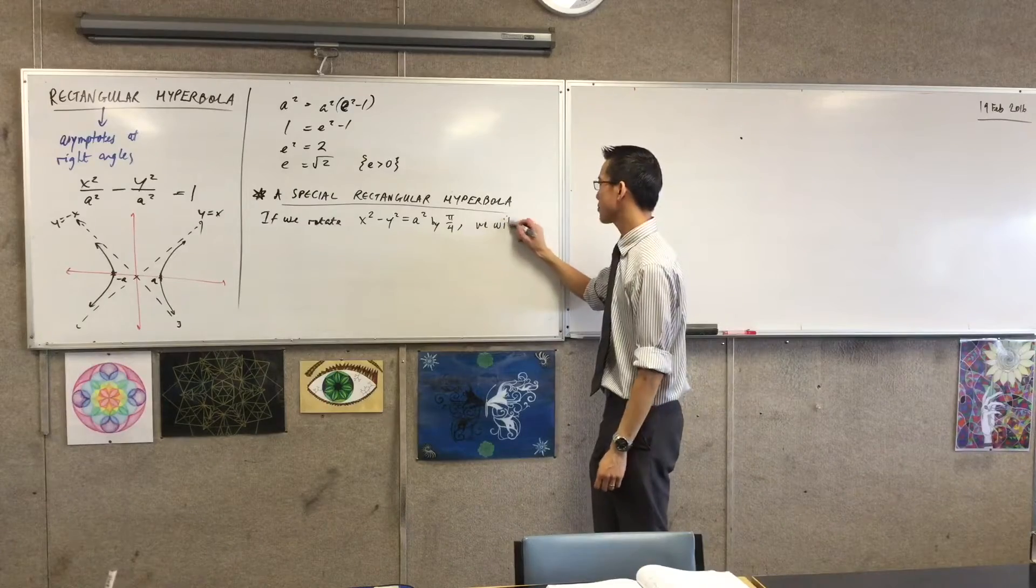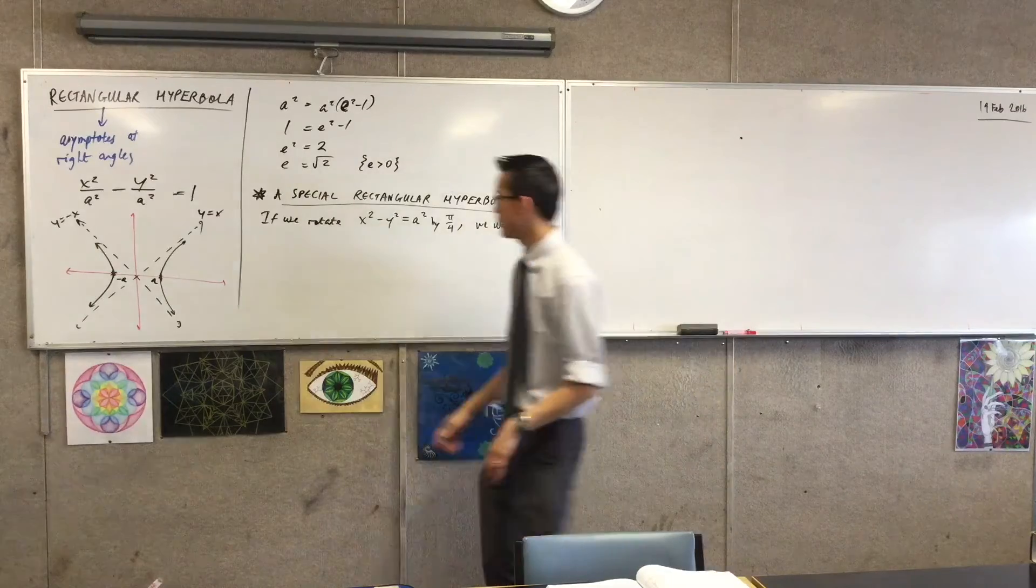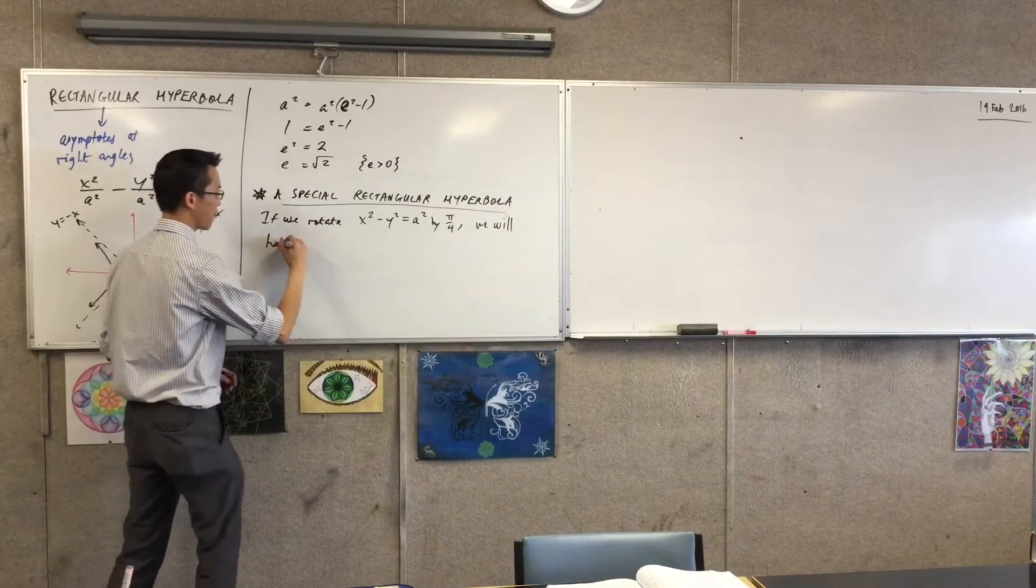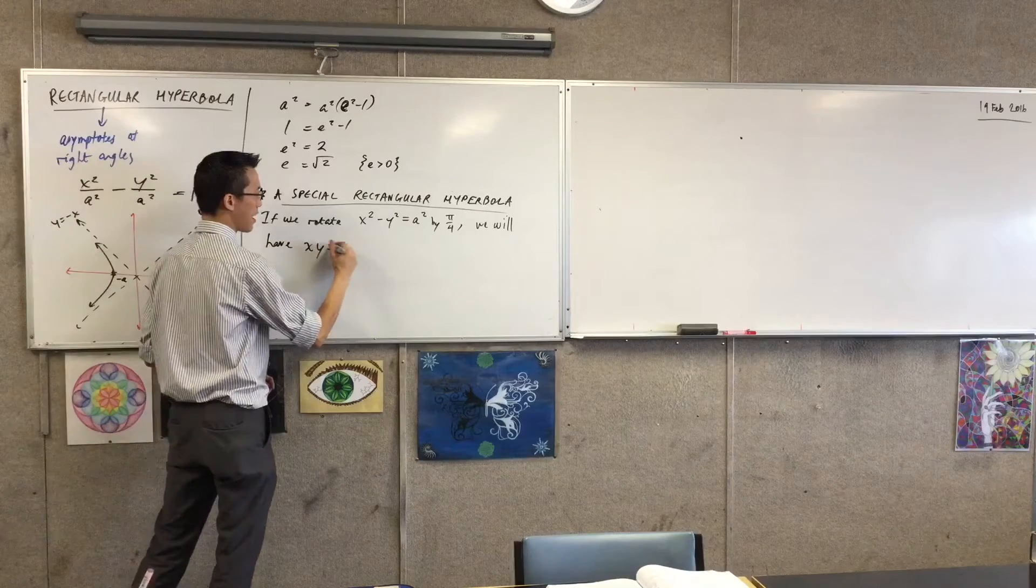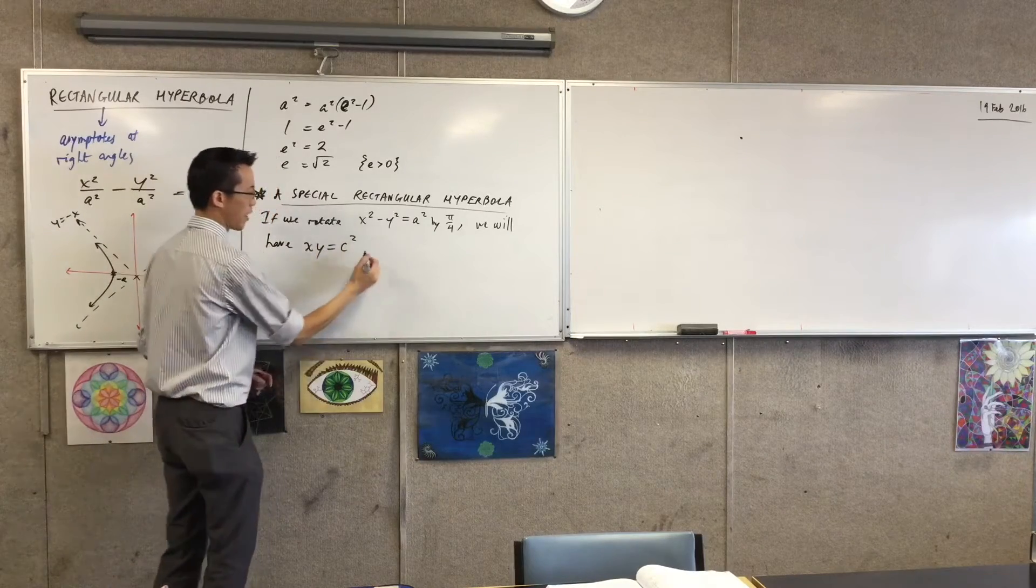We will get, and we write it in a different form this time, we will have this hyperbola: xy equals c squared.